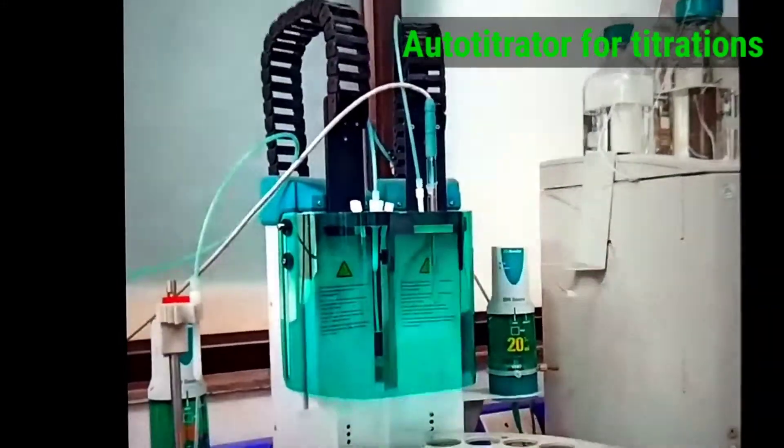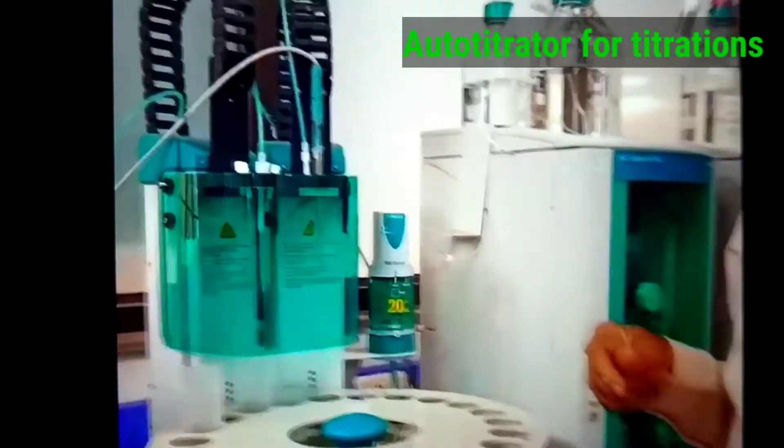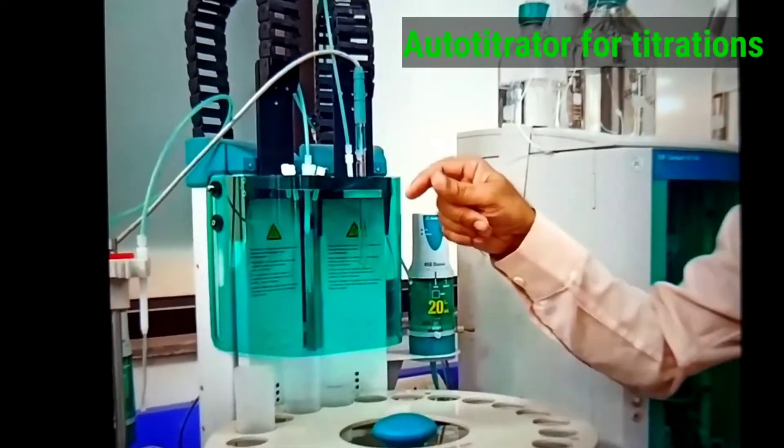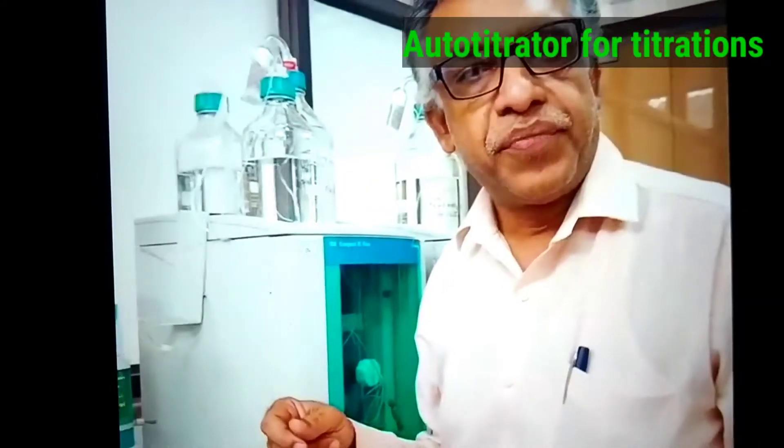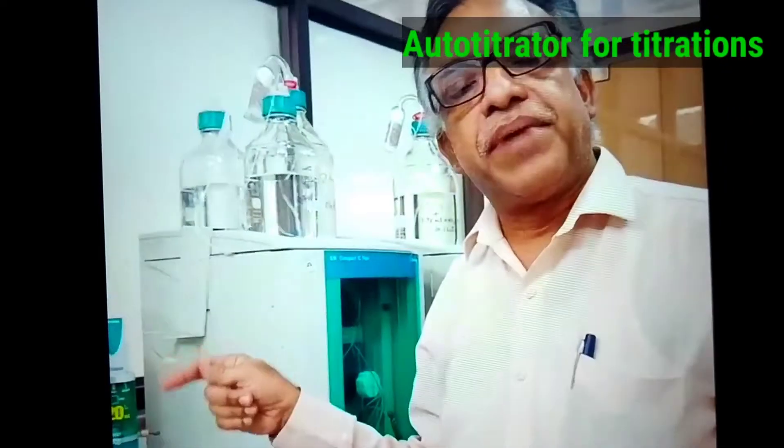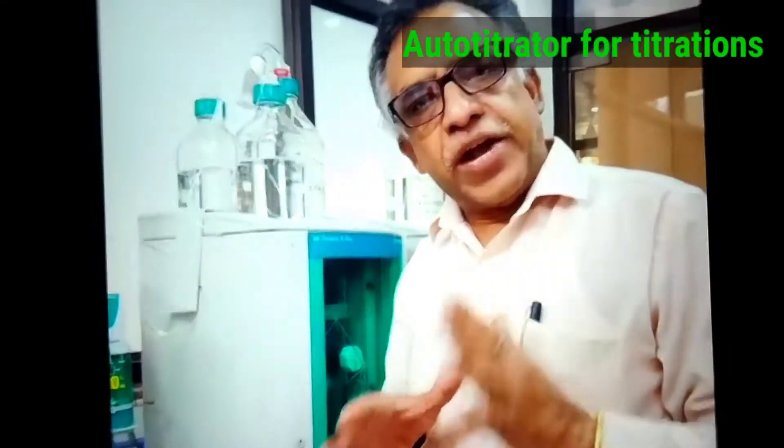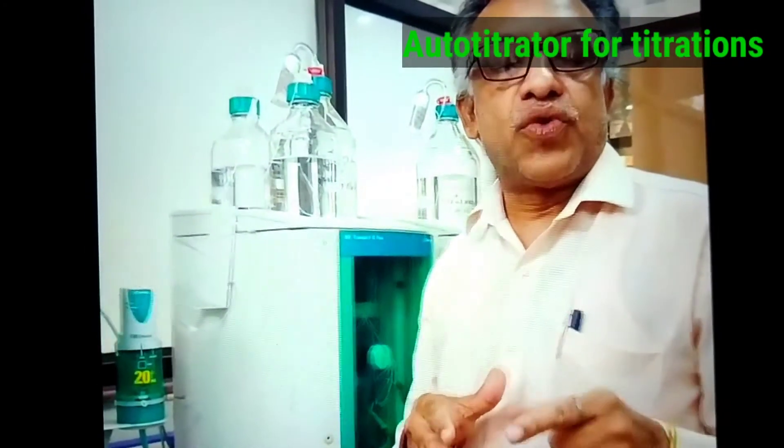So then it will again add this sulfuric acid into the sample, again drop by drop, till the pH comes down to 4.2. So in this fashion two endpoints will occur, and at the two points it will count how much acid has been consumed for getting the two endpoints.